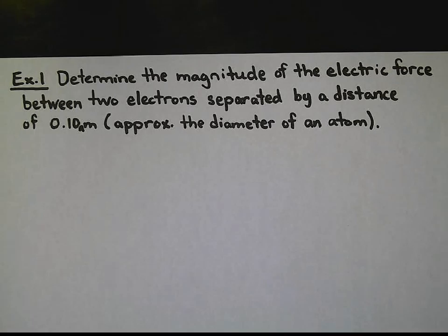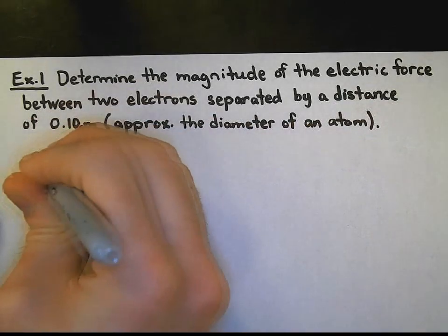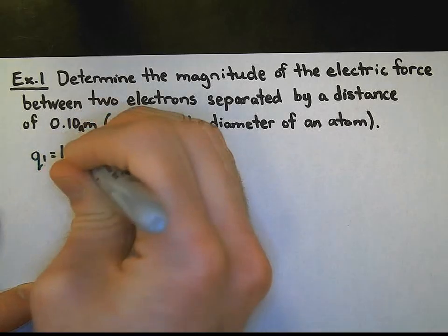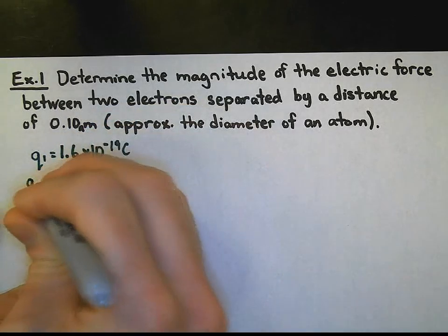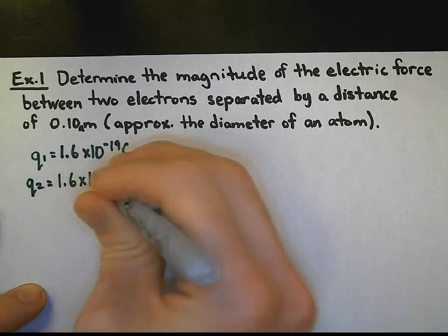So what we should know is that the charge of an electron, in this case Q1, is approximately 1.6 times 10 to the negative 19 coulombs. And we have our second charge on the electron, again 1.6 times 10 to the negative 19 coulombs.